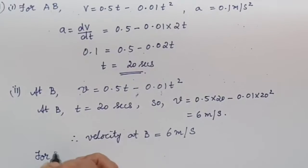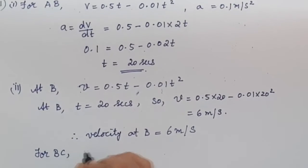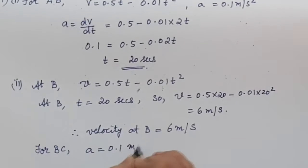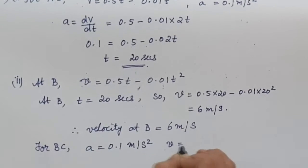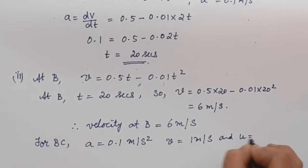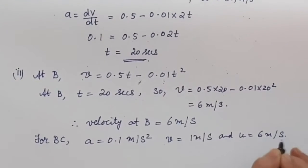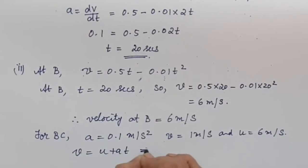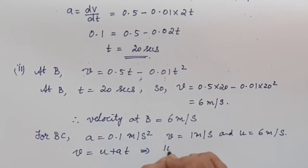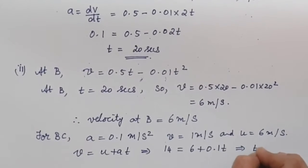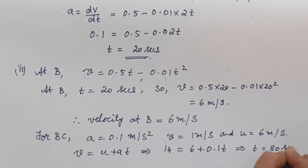For section B to C, it is given that a = 0.1 m/s², V = 14 m/s, and U = 6 m/s. Using V = U + at, we get 14 = 6 + 0.1t, which simplifies to t = 80 seconds.